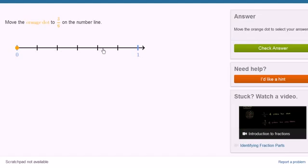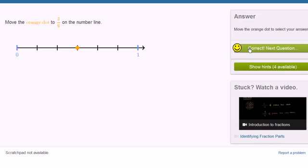So we already see that they've divided up the space between 0 and 1 into six equal sections. 1, 2, 3, 4, 5, 6. So we need to move it to three of those sections. 1, 2, 3. Let's check our answer. Let's do a couple more of these.